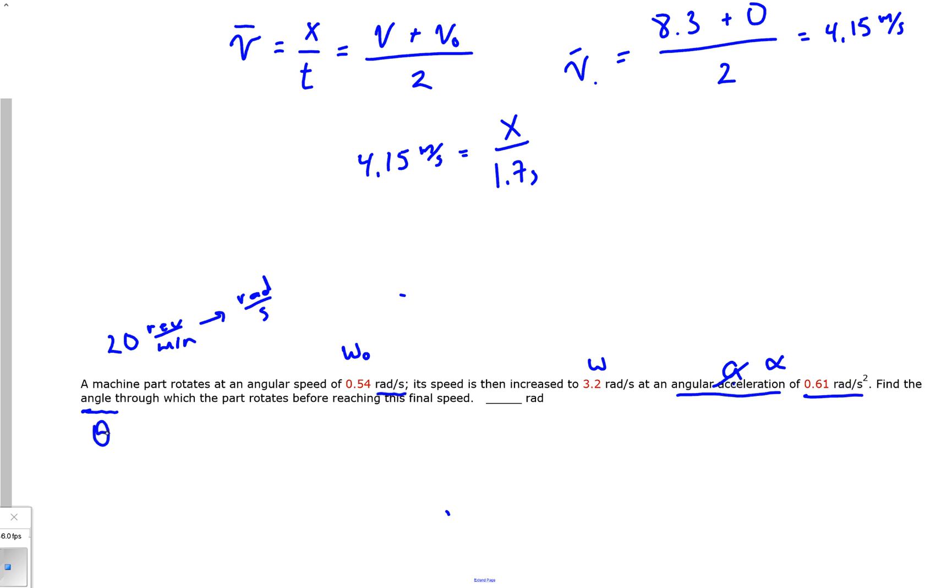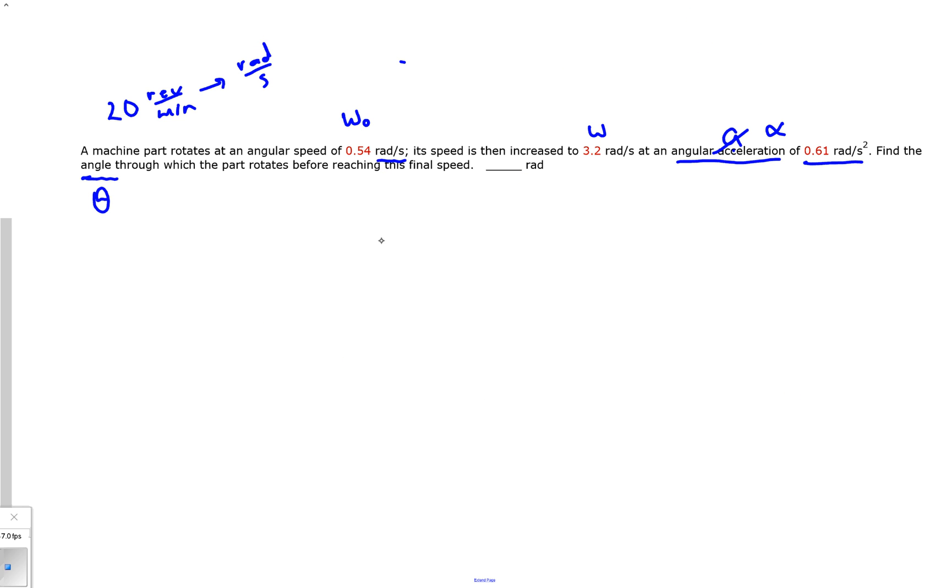Find the angle that this object rotates through. If you remember last video, we talked about every equation you had in your linear world, you had an equivalent in circle world. So our rotational equations look like this. There's our acceleration equation, we've got a position time equation for acceleration rotational kinematics. And if you notice, there is no time given in this problem.